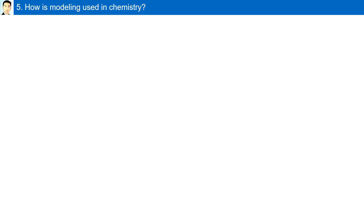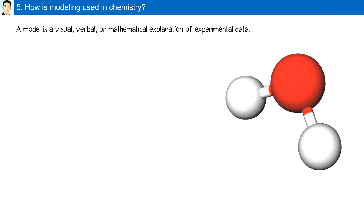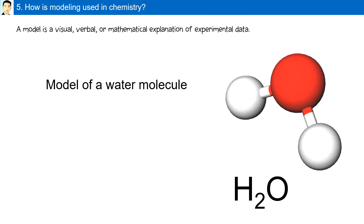How is modeling used in chemistry? A model is a visual, verbal, or mathematical explanation of experimental data. For example, the model shown is a model of a water molecule. The hydrogen atoms are 104.5 degrees apart from each other in a water molecule, roughly making a shape of a V, with the oxygen shown in red.